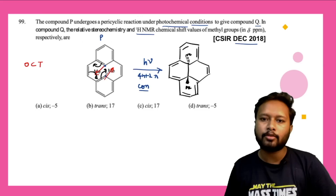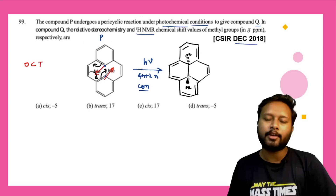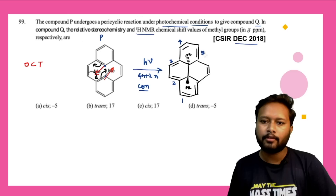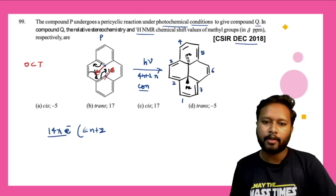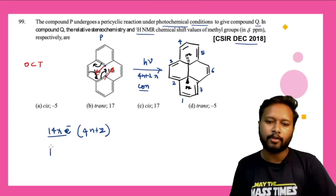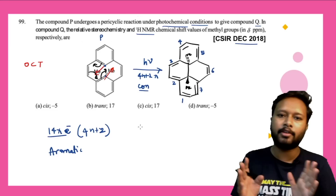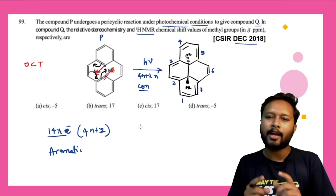Talking about the proton NMR: if you ignore the central carbon and look at the terminal ones, you have a 7π system — meaning 14π electrons. The system is of 4N+2 type, it follows Hückel's rule, it's planar, and it is going to be an aromatic kind of system. Due to these terminal double bonds, this molecule is going to have an aromatic ring current, which will cause an anisotropic effect.